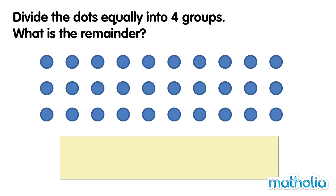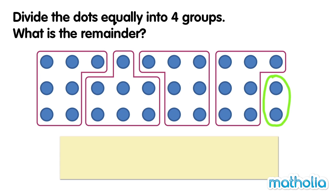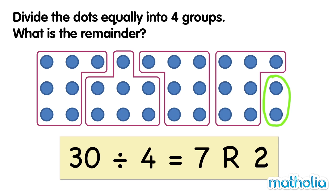Divide the dots equally into four groups. What is the remainder? There are thirty dots. We can place them equally into four groups, with seven dots in each group. There are two dots remaining. Thirty divide four equals seven remainder two.